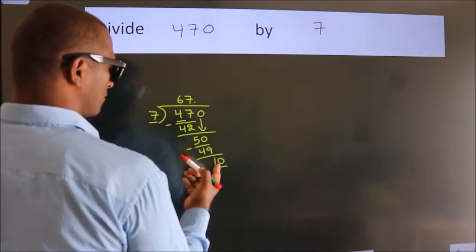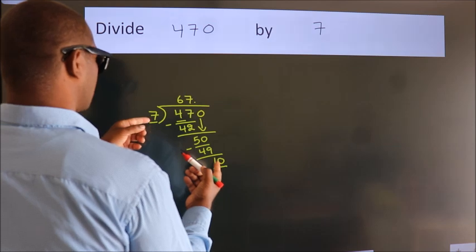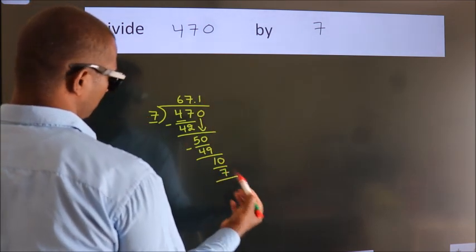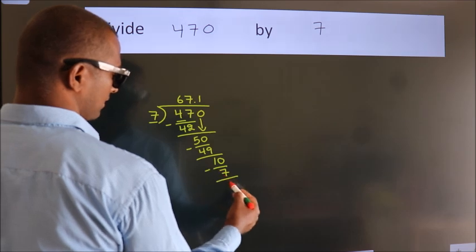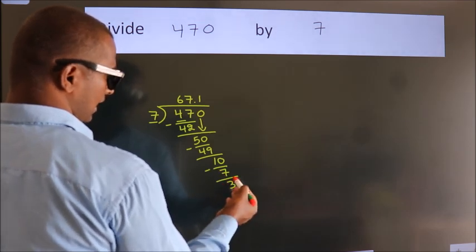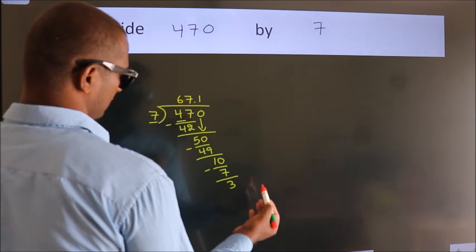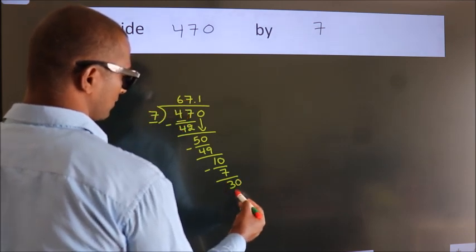A number close to 10 in the 7 table is 7 times 1, which is 7. Now we subtract. We get 3. After this, we already have the decimal. So directly take 0. So 30.